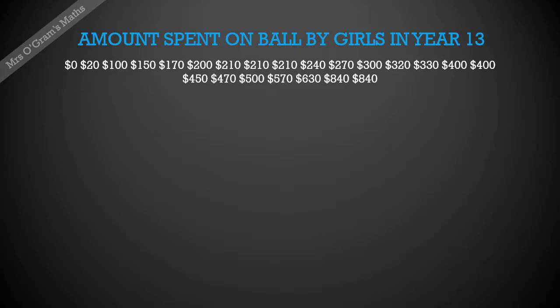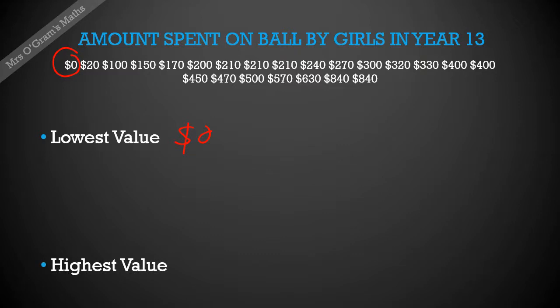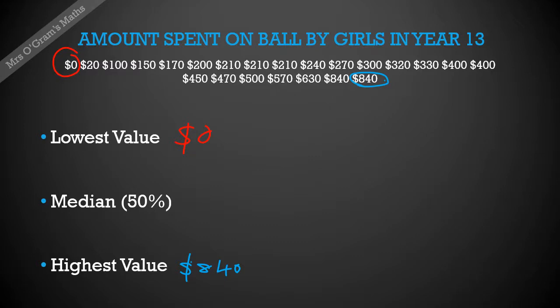Now we can have a look at working out those values. The lowest value — that's a nice easy one we can see right there — is $0. The next easy one is the highest value, which is 840. Our median is our middle value, so we want to count inwards from each end until we get our middle value. Crossing them off as we go is an easy way to keep track, and we get 300 in the middle.